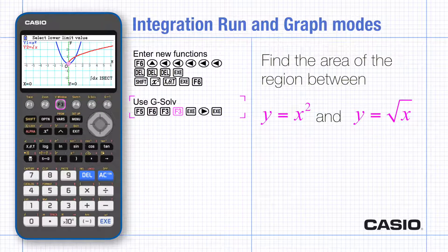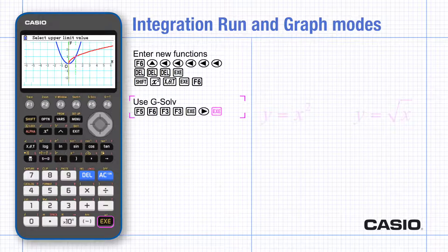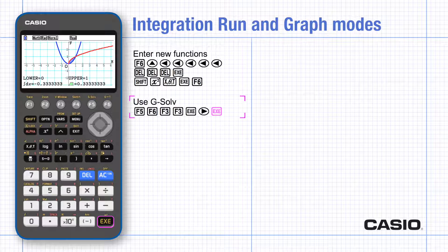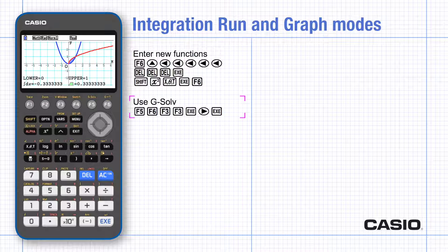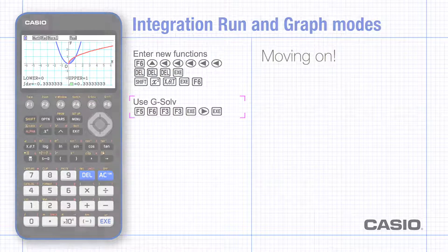So execute and then the cursor moves across to the next point of intersection. Execute and the area between the curves is found. Notice the area here is given as a negative value. This is because y1 is below y2 for that whole region and the calculator has used the difference y1 minus y2 which is negative throughout that region.